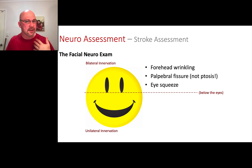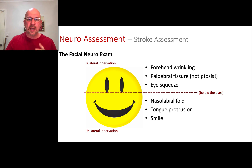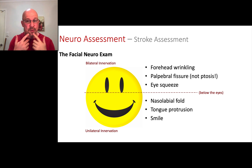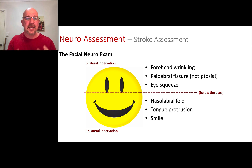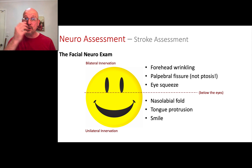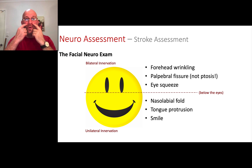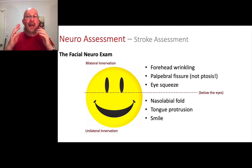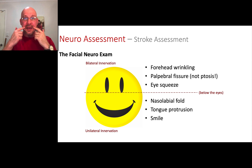For the bottom part of the head, where there's unilateral innervation, we're looking at three things. Smile and tongue protrusion we've already done. The only other thing we throw in is the nasolabial fold — naso means nose, labia means lips — so the nasolabial fold is the fold that comes from the nose down to the lips. In most people, these are bilaterally equivalent: the same on both sides.